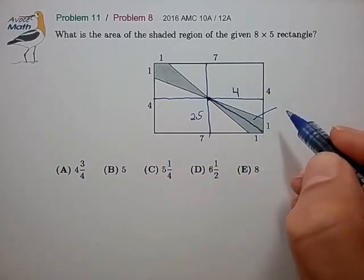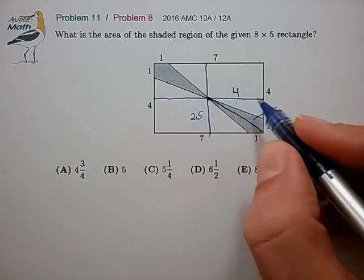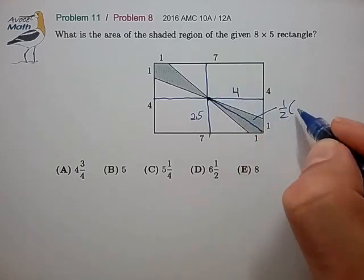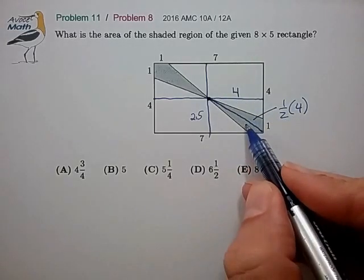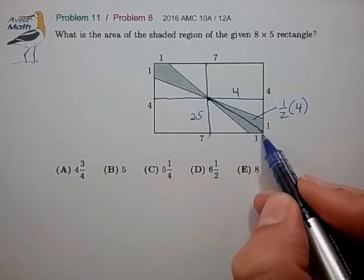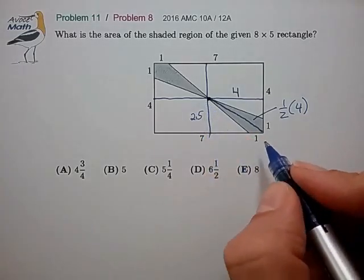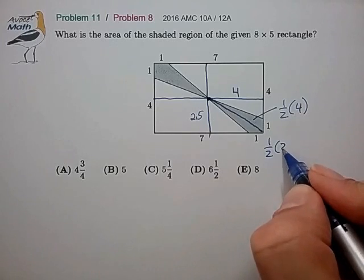So this triangle is base times height times one half, so that's one half times 4. And this triangle is base of 1, height of 2.5 times one half, so that's one half times 2.5.